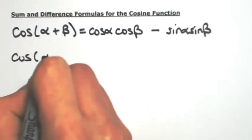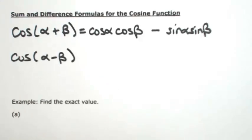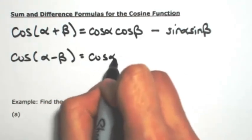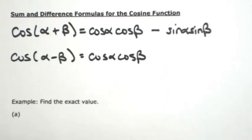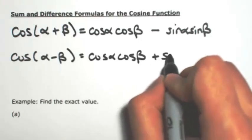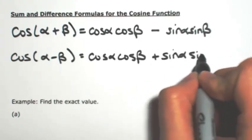So then the same is true if I want to do the difference. So cosine of alpha minus beta is still going to be cosine, cosine, so cosine of the first one, cosine of the second one. Change that sign to plus, and then sine of the first one, sine of the second.